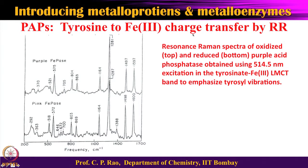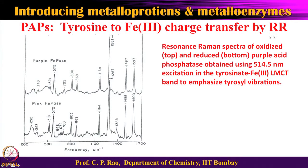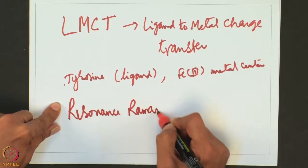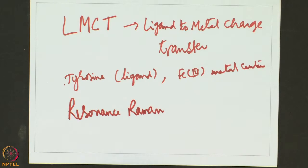This charge transfer can be recognized by looking at the absorption spectrum, where a charge transfer band is present. Sometimes this charge transfer band overlaps with other bands, making it difficult to distinguish. In such cases, you can use a vibrational spectrum — not a simple IR or FTIR — but the resonance Raman spectrum, referred to as RR.